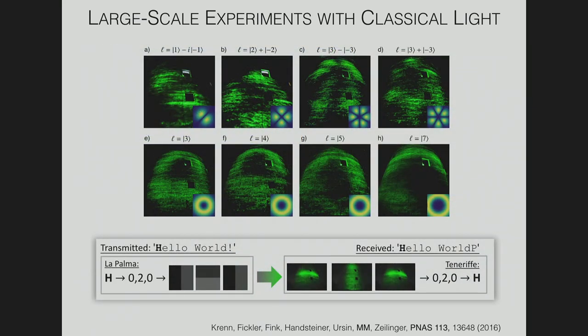This is what the mode looks like after propagating 143 kilometers — it's huge, so not necessarily practical. This is the mode on the wall of the telescope — we're beyond trying to get it into the telescope, but we have it on the telescope. We encoded a simple message and it was received with a slight grammatical error.